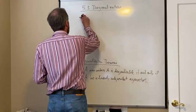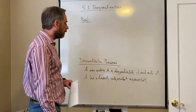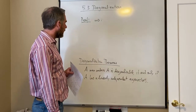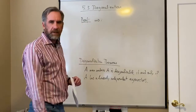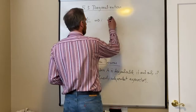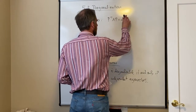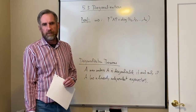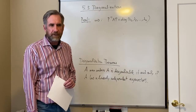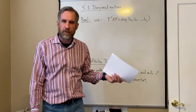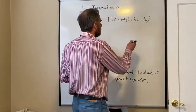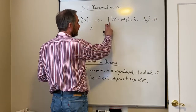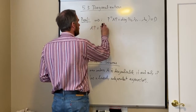I want to do the proof of this theorem, though not textbook-perfect to save time and space. Since this is an if-and-only-if statement, we have to prove two directions. The first direction: if a matrix is diagonalizable, then it has n linearly independent eigenvectors. We start with the equation P inverse A P equals D (the diagonal matrix).